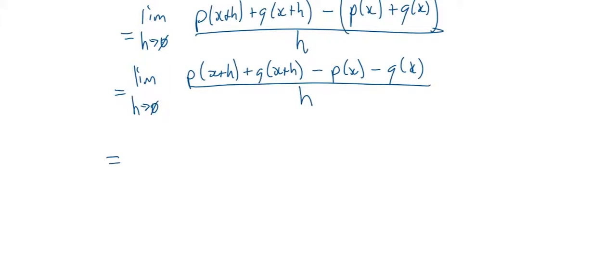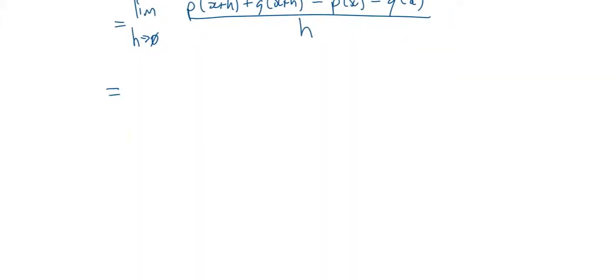So, you could do the next two steps together as one, but I'm going to do it as two, since it's the first time we're seeing it. So, this is P at X plus H minus P at X plus Q at X plus H minus Q at X.